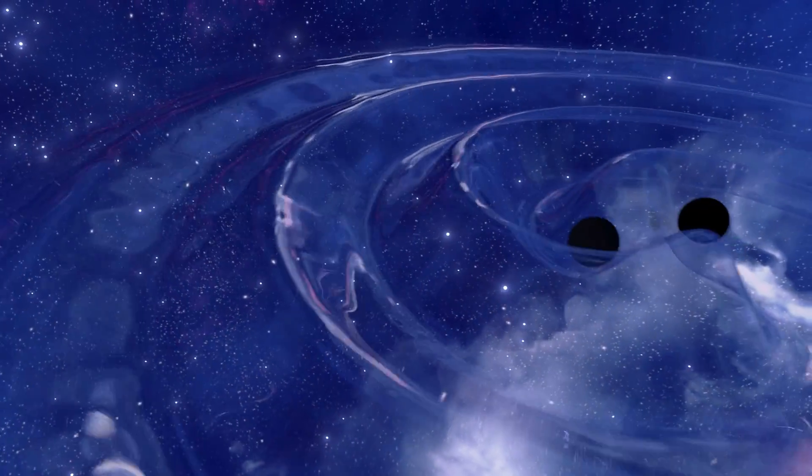As a result, the orbit shrinks, the two black holes speed up, they get closer and closer, and the orbital period becomes shorter and shorter. Frequency and amplitude increase over time, until finally the two event horizons touch and the two black holes merge into one.